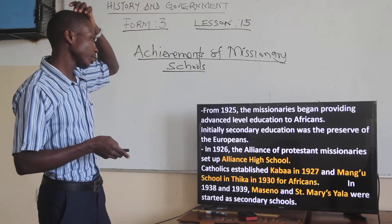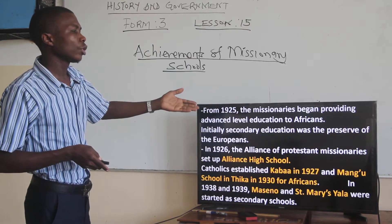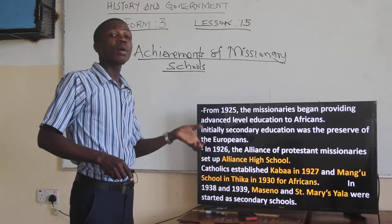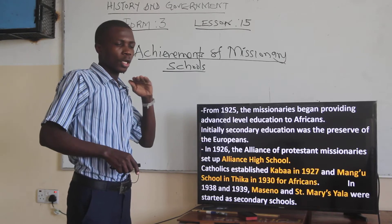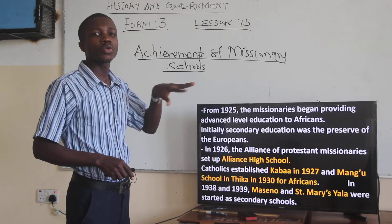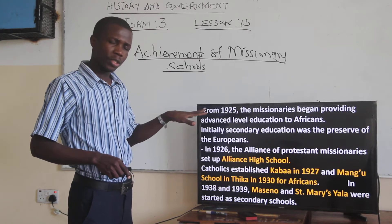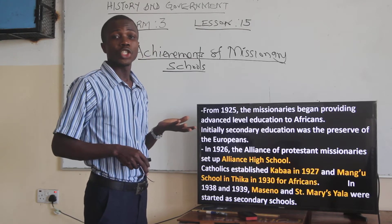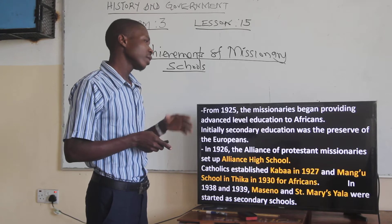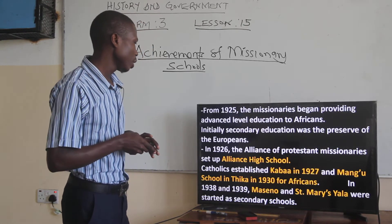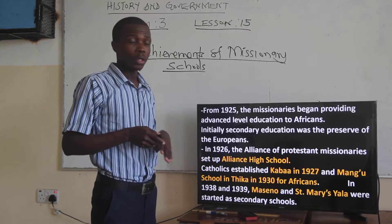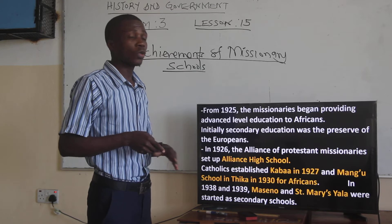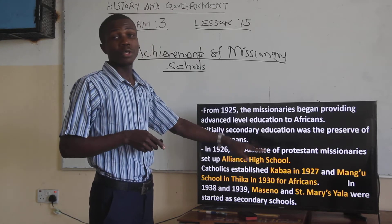Initially, secondary education was reserved for the Europeans. For a long time, Africans were only being educated up to a certain level, and secondary was reserved for the whites or the British in Kenya. Then in 1926, the Alliance of Protestants and Missionaries set up Alliance High School.